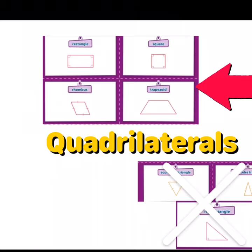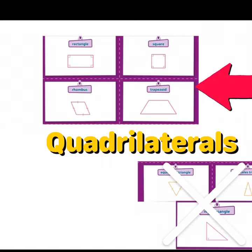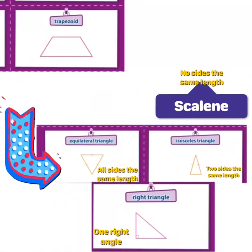All triangles will also tessellate because all of the interior angles of triangles add up to 180 degrees. Remember that's a factor of 360, so it's able to cover a surface completely with no gaps or overlaps.